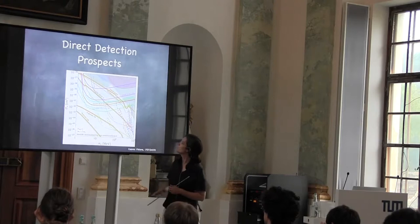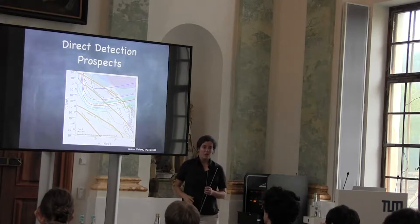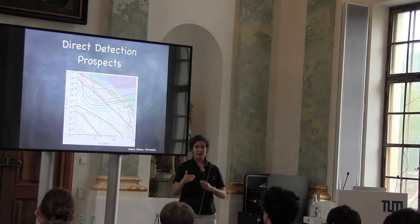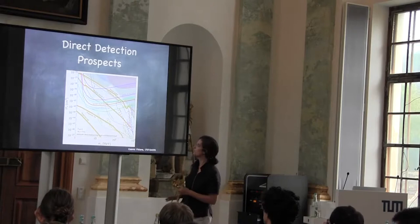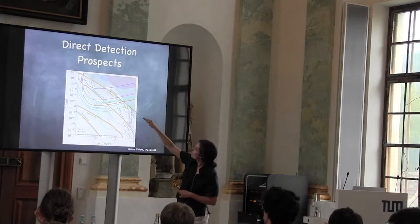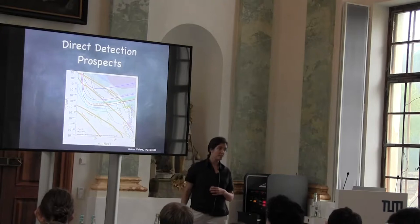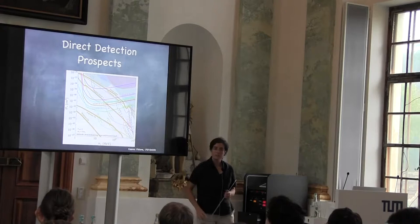This line here corresponds to an asymmetric dark matter particle whose coupling to electrons is fixed by the fact that you need dark matter/anti-dark matter annihilating to e⁺e⁻ to get rid of the anti-dark matter such that annihilation doesn't continue. The thing I want to emphasize is that there are several experiments with very modest amounts of exposure — not 10-ton-years — that go after these very well-defined benchmarks.